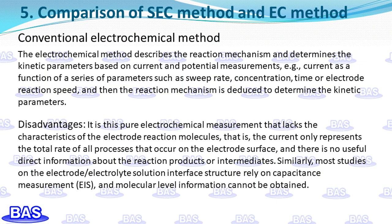Comparing spectro-electrochemical methods with traditional electrochemical methods: the electrochemical method describes reaction mechanisms and determines kinetic parameters based on current and potential measurements, such as current as a function of sweep rate, concentration, time, or electrode reaction speed. The disadvantage is that pure electrochemical measurement lacks molecular-level information about electrode reactions — the current only represents the total rate of all processes on the electrode surface, with no direct information about reaction products or intermediates. Similarly, most studies on the electrode-electrolyte interface structure rely on capacitance measurement, and molecular-level information cannot be obtained.